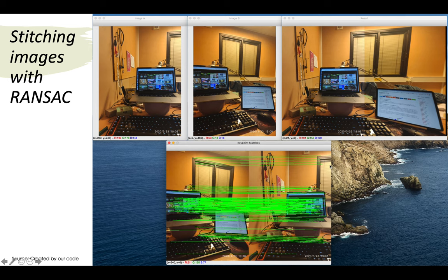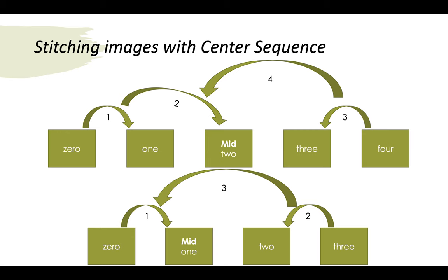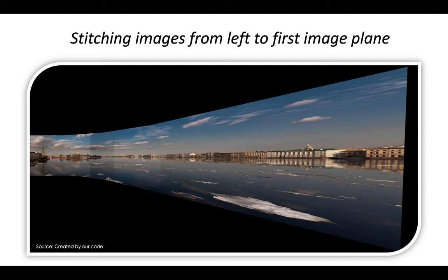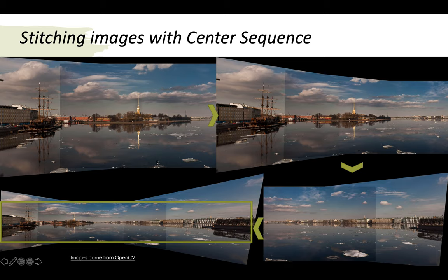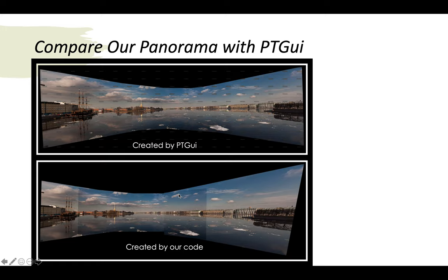This is our result for stitching two images using keypoint matching and RANSAC. For stitching multiple images, we use a center sequence strategy. Stitching continuously onto the first image plane causes too much distortion, limiting us to about four pictures. With the center sequence strategy, we can stitch more pictures together — even five or six images.